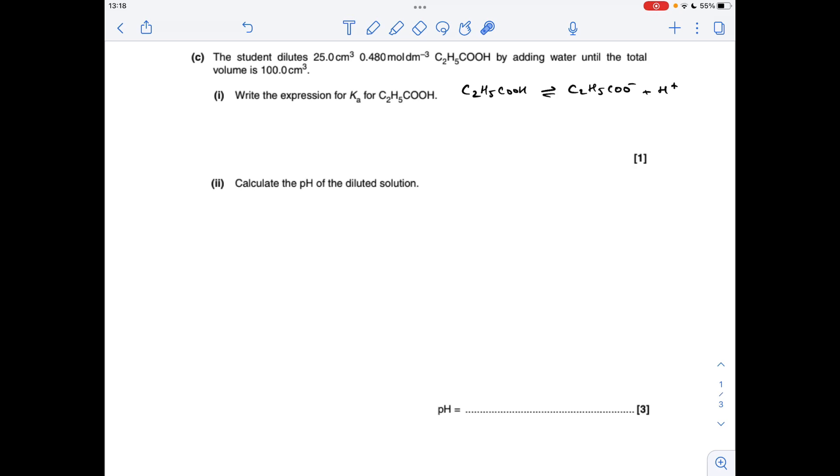Part C now, we've got to write the expression for Ka for propanoic acid. I've written up the dissociation equation already. So Ka is the equilibrium concentrations of the products multiplied together, divided by the reactant. Just be careful with this one. You can't get away with writing the H+ concentration squared over concentration of acid. It has to be everything present.